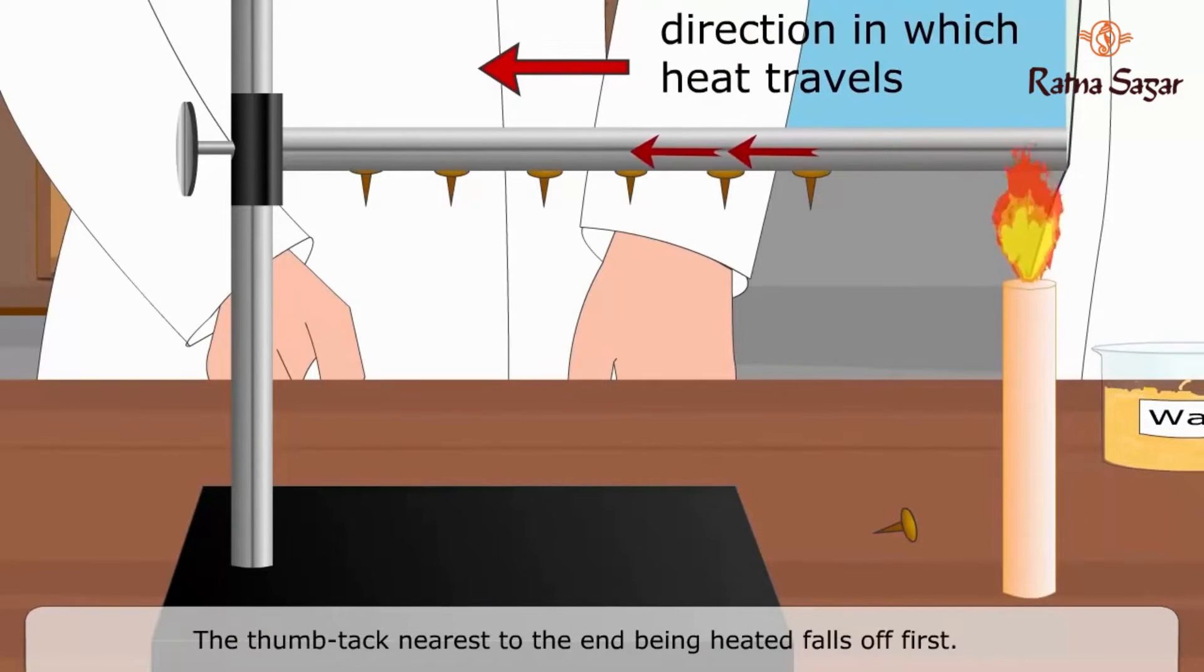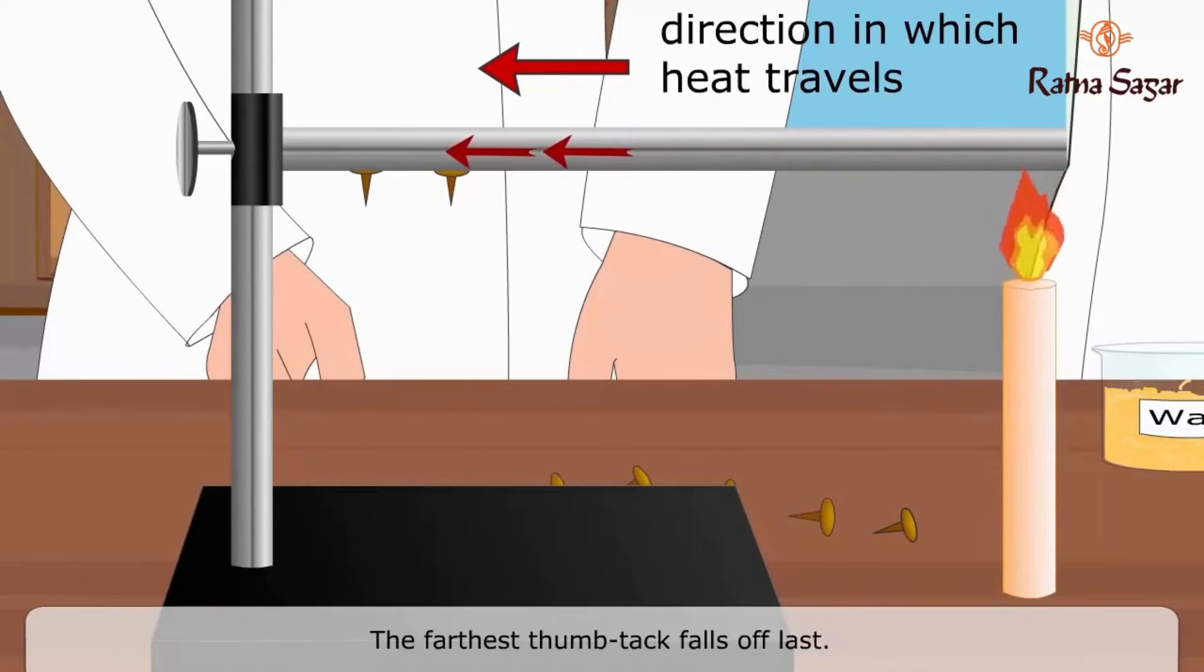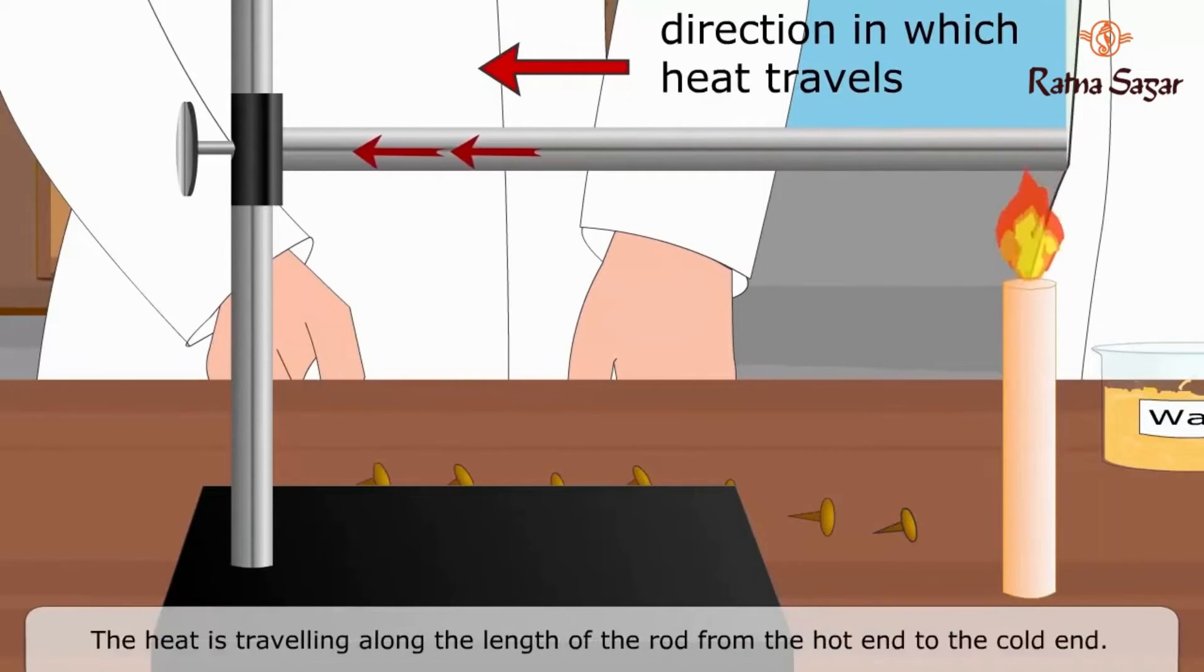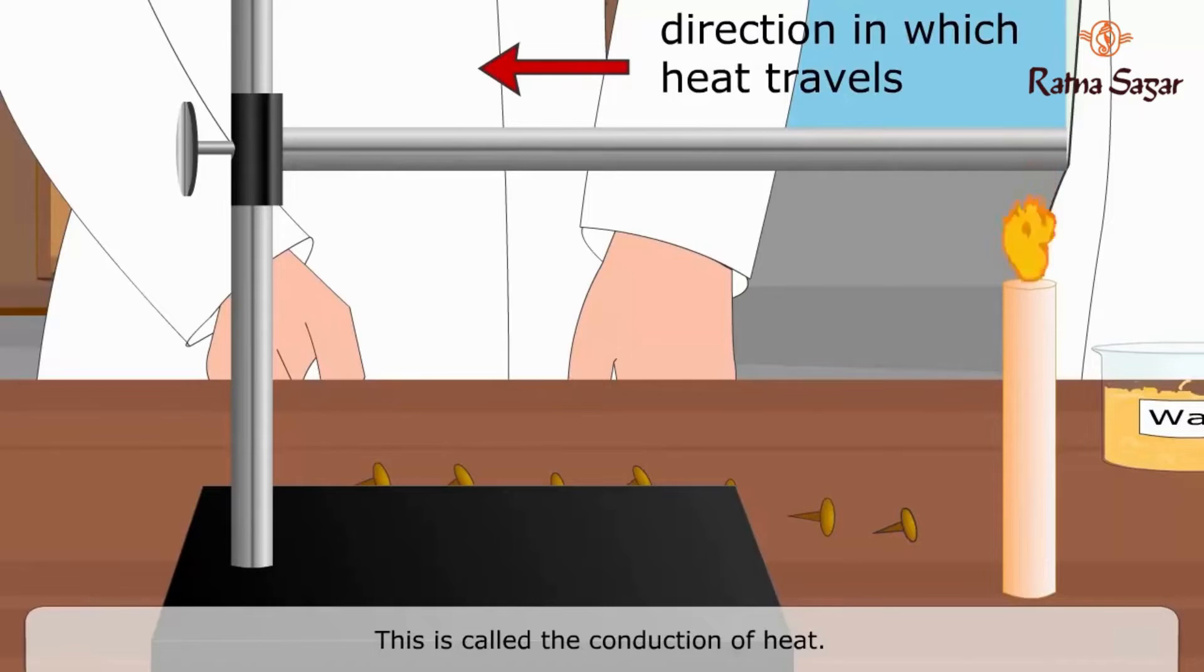The thumbtack nearest to the end being heated falls off first. The farthest thumbtack falls off last. The heat is traveling along the length of the rod from the hot end to the cold end. This is called the conduction of heat.